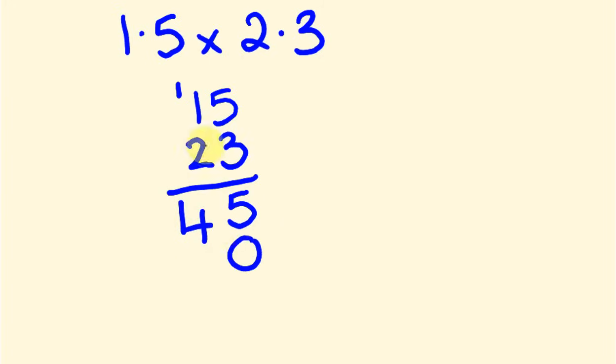We put a 0 down here. 2 times 5 is 10. We carry the 1. And 1 times 2 is 2. Plus 1 is 3. And then what we do is we add these numbers together. So we get a 5, a 4, and a 3. So 345. But that's not our answer. It would be if it was 15 times 23. That would be our answer. But we're going to be slightly different here.